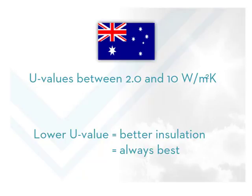Regardless of which climate zone — hot, cold, or somewhere in between — the building is built in, it's always best to select window systems with a low U-value.